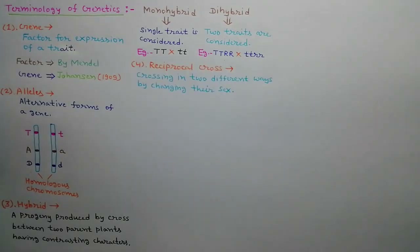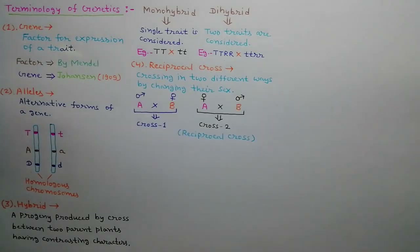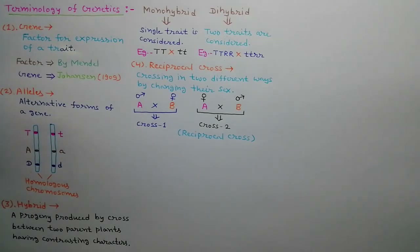When two plants are crossed in two different ways by changing their sex as male and female, it is called a reciprocal cross. As shown in the diagram, in the first cross plant A is used as the male parent and plant B as the female parent, while in the second cross plant A is the female parent and plant B is the male parent. Hence cross 2 is known as the reciprocal cross.